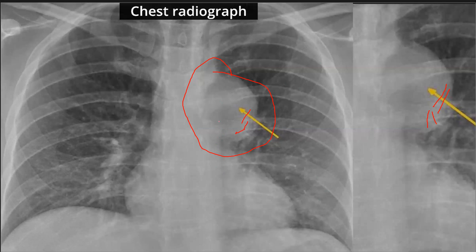Sometimes the descending aorta interface is not well seen below a certain level due to direct contact of the aorta with pulmonary vessels, superior segment vessels, or other mediastinal structures. So where is the mass? It is not in the middle and not in the posterior mediastinum.